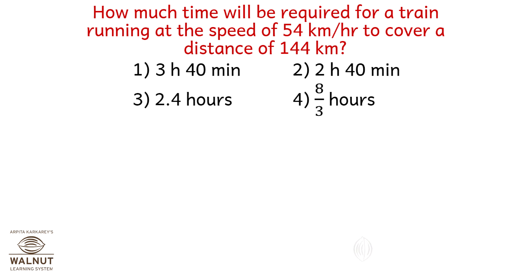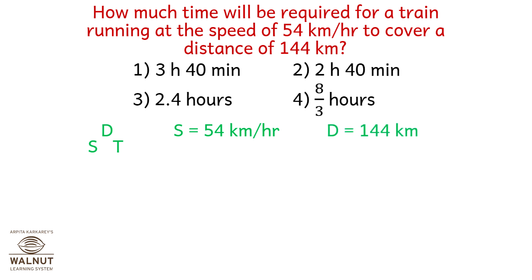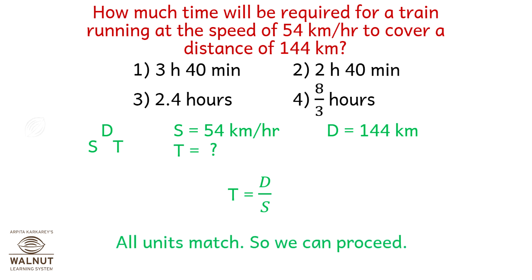How much time will be required for a train running at 54 kilometers per hour to cover a distance of 144 kilometers? Using the formula, time equals distance upon speed. Speed is 54 km/h and distance is 144 kilometers. All units match, so time equals 144 upon 54, which gives 8 upon 3 hours — option number 4.